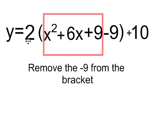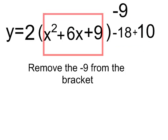And the reason I need to be careful is that everything in this bracket is multiplied by 2. So if I remove the negative 9 from that bracket, when it changes to being outside of the bracket, it's actually a minus 18. The reason it's a minus 18 is I had to multiply the negative 9 times the 2 in front of the bracket.